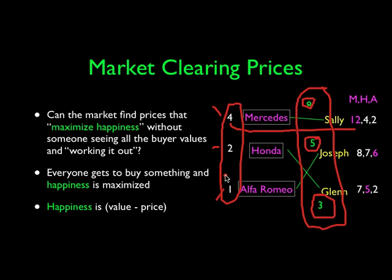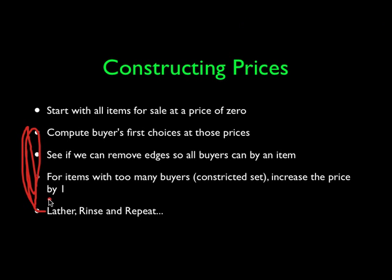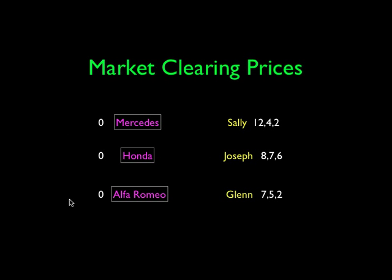How can we avoid fighting over the Mercedes and yet maximize happiness? We're going to construct the market clearing prices. The simple rules: start with all items for sale at a price of zero. Compute the buyer's first choices — sometimes a buyer will have two choices if their happiness is equivalent with two items. See if we can remove some edges so that everybody is buying something. If everybody is buying things and we can remove edges, we're done — each buyer buys one item. If there's a conflict with too many buyers for an item, we increase the price of that item by one, and repeat.